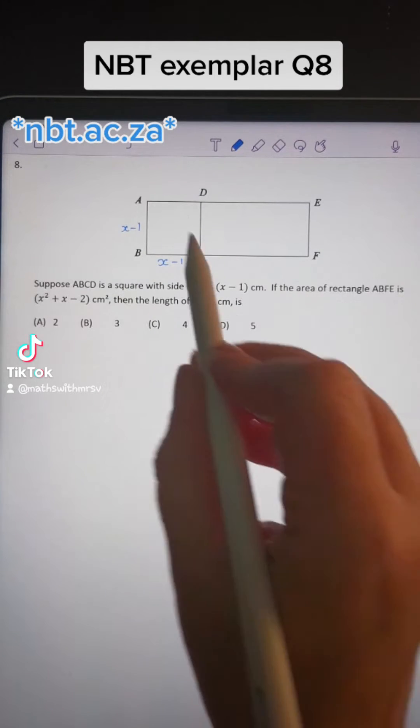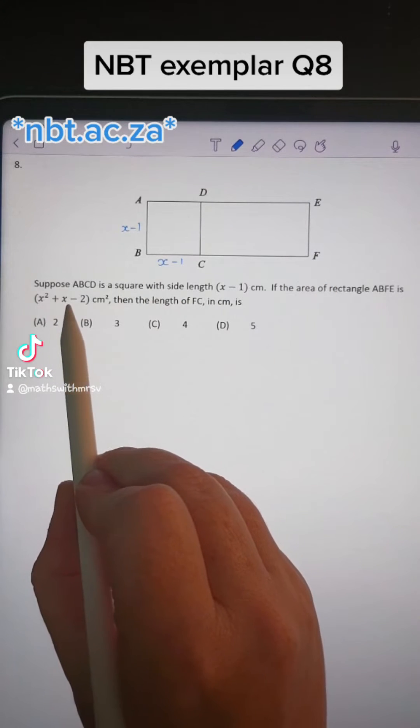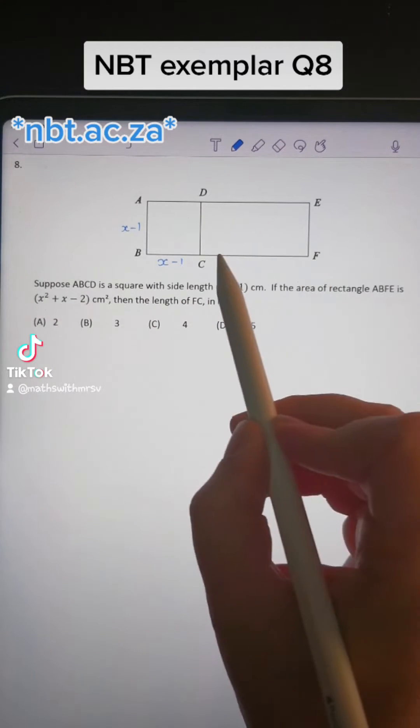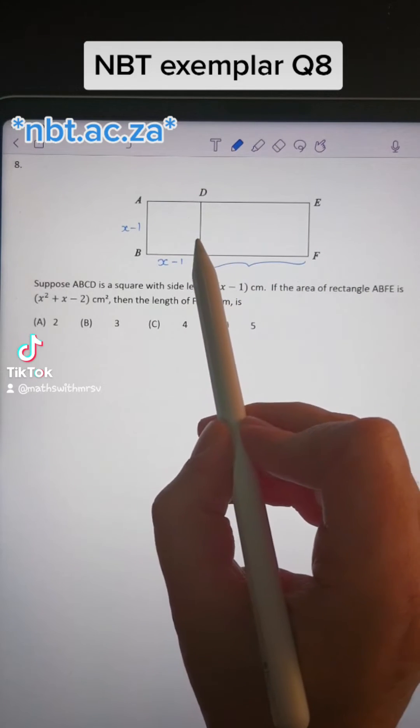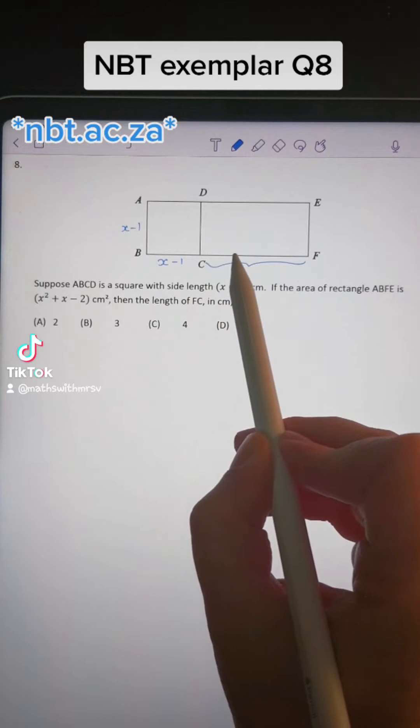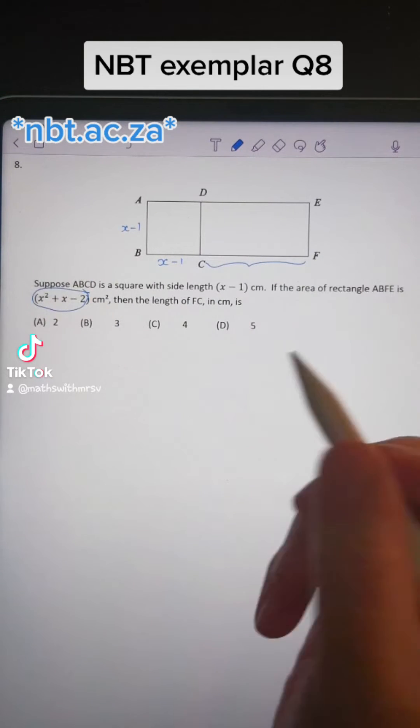Then it tells us if the area of this entire rectangle is equal to x squared plus x minus 2, what is the length of FC, this one here? What we can do is we can actually work out the length of this entire line here by taking the factors of this area here.